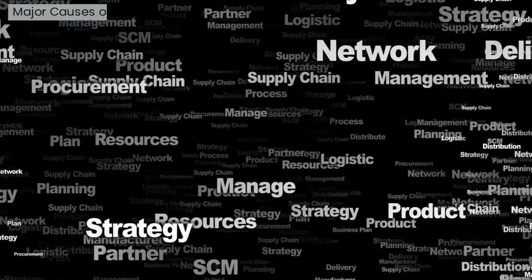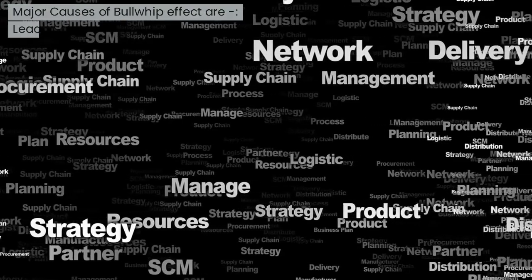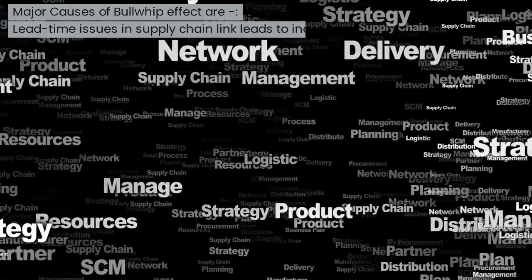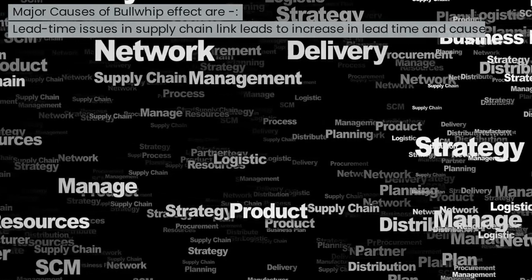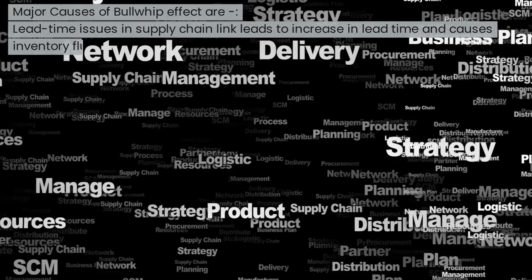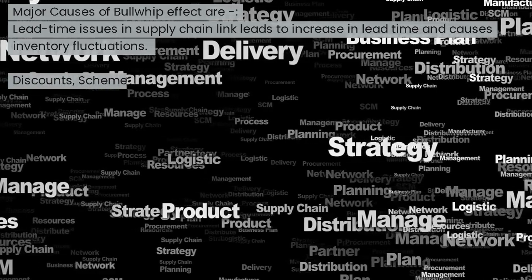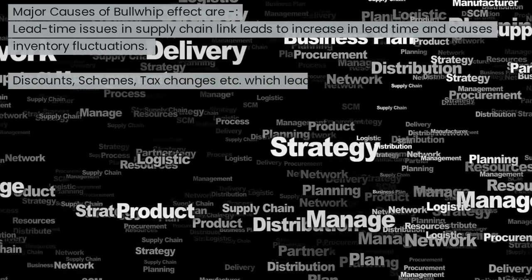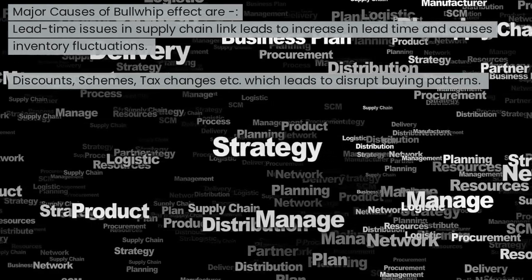The major causes of the bullwhip effect are: lead time issues in supply chain links, which cause inventory fluctuations; and discounts, schemes, and tax changes, which disrupt buying patterns.